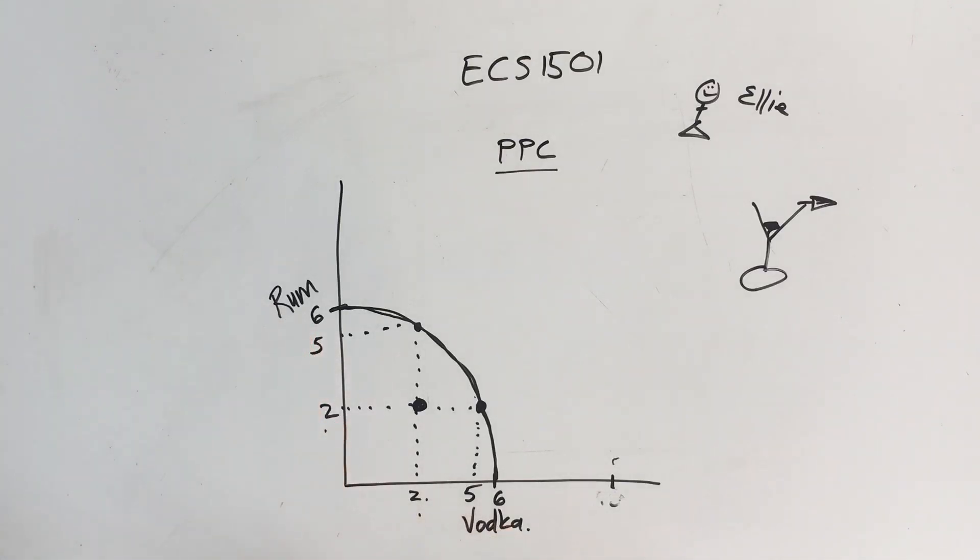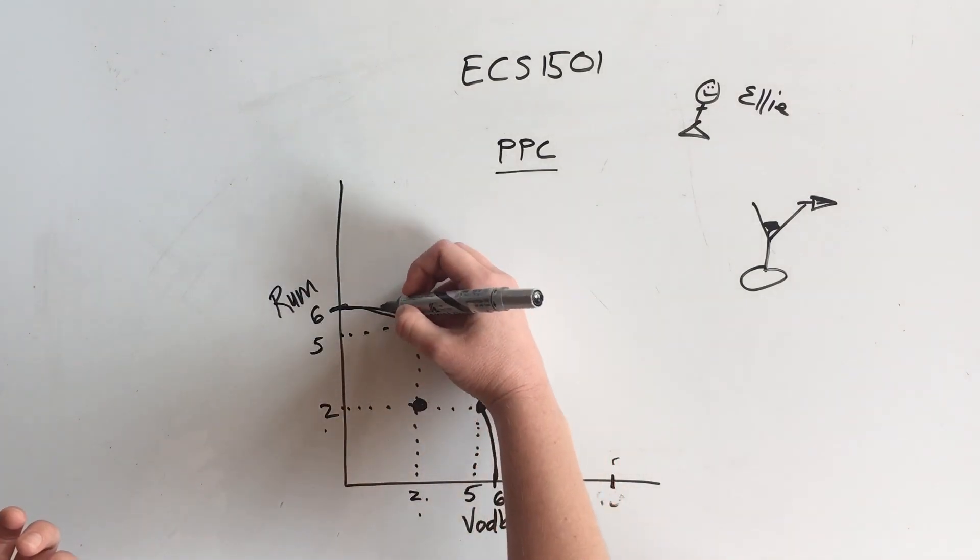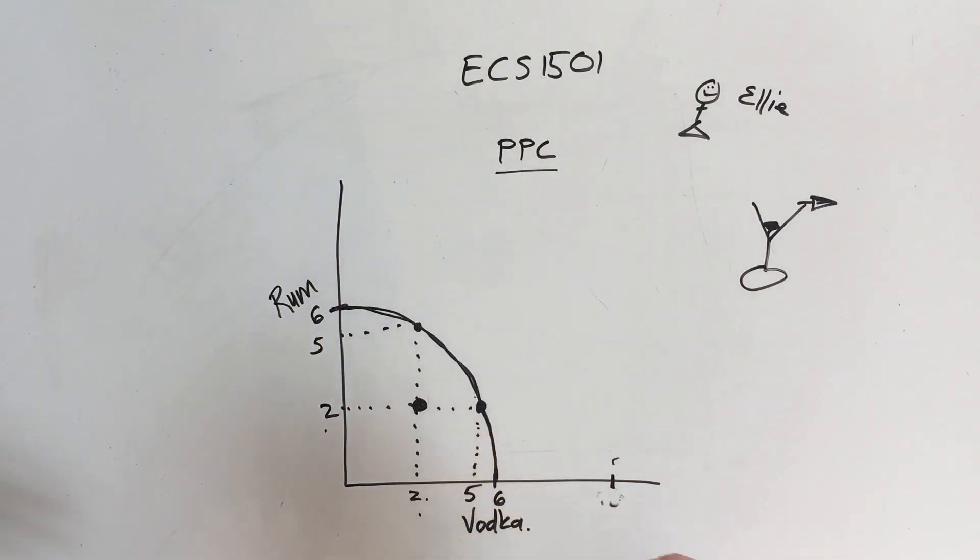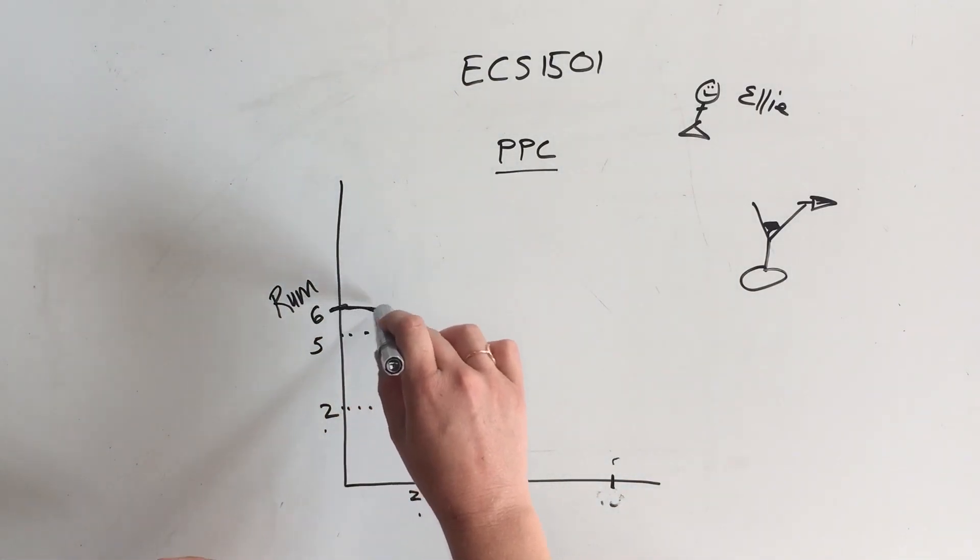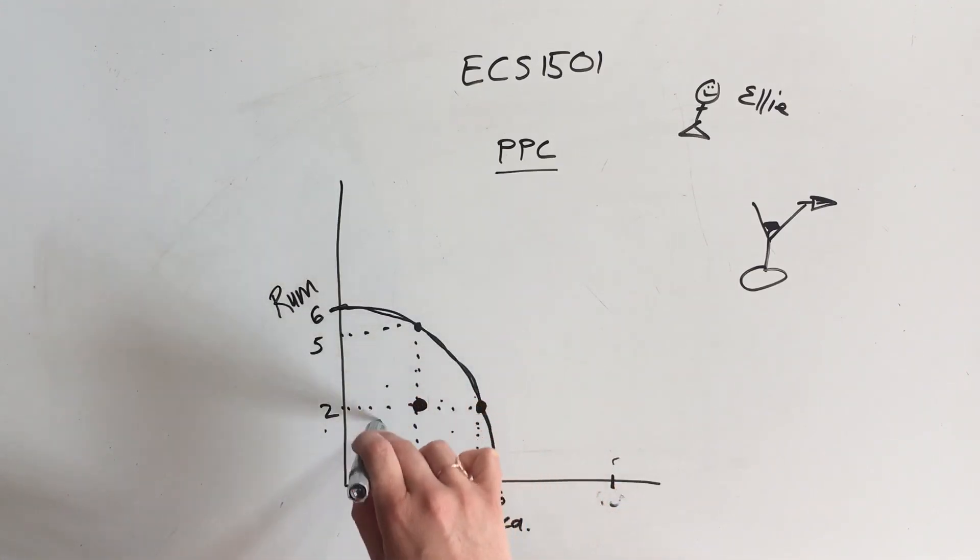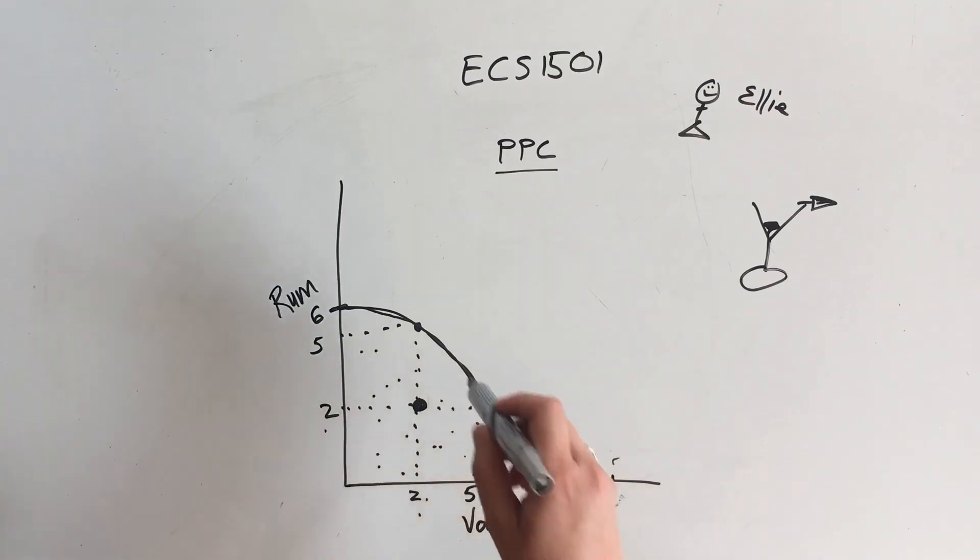We could do a better job at it. We could go on this line and choose to buy two bottles of rum and five bottles of vodka. The reason why we can only do six and six is because of constraints. It's scarcity, it's the whole thing in economics where there's limited resources and you can't have everything, so you have to make choices. You have to choose between the one or the other, but on this line it is an optimal choice. As soon as we go inside the curve, we are not really maximizing the amount of cocktails we'd be able to make, so it's possible but it's not optimal.